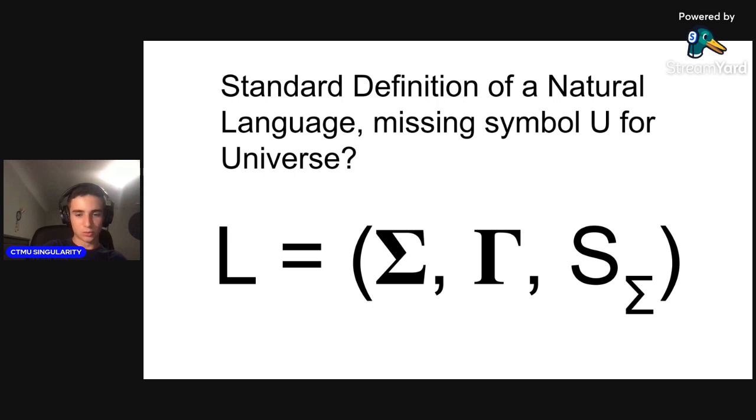Written out, L = (Σ, Γ, S_Σ), meaning L (language) consists of Σ, a finite alphabet of letters which combine to form words and expressions; Γ, the grammar which determines which combinations of letters, words, phrases, etc., are included in a language; and S_Σ, the surface structure of the language—the set of strings which Γ determines.